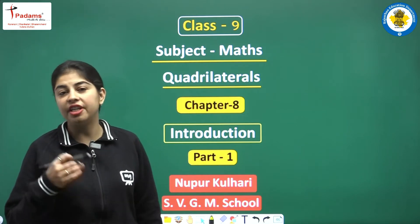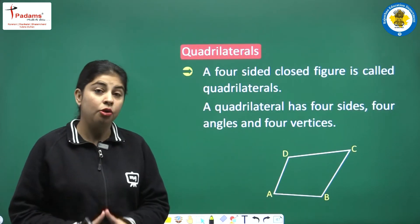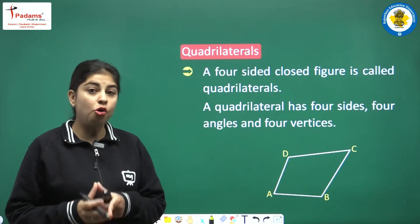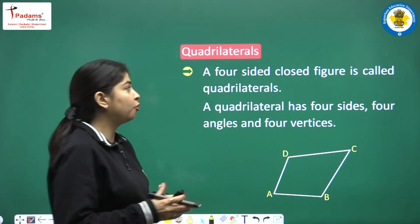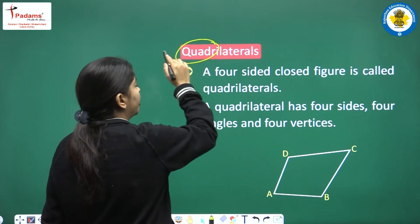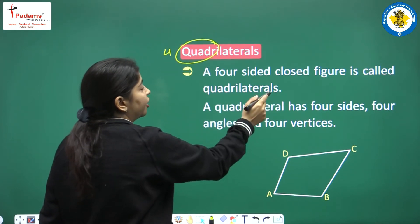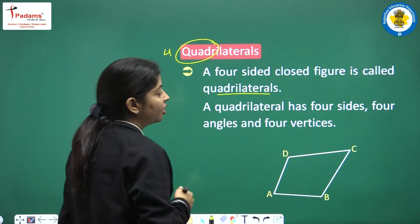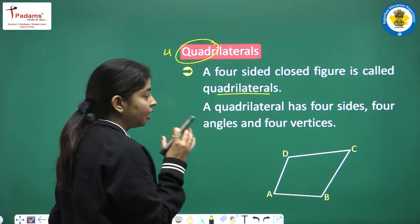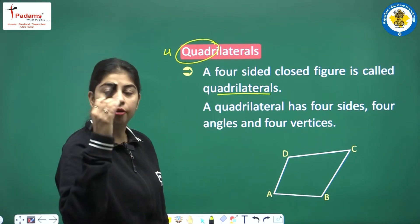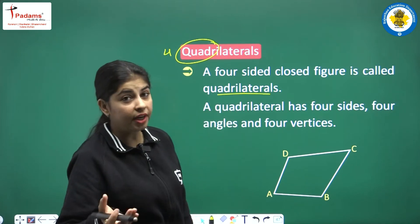Let us start this chapter with the definition of quadrilateral. What is a quadrilateral? A quadrilateral is a four-sided closed figure. Quad means four. A four-sided closed figure is called a quadrilateral. It has four sides, four angles, and four vertices.